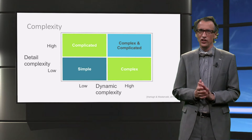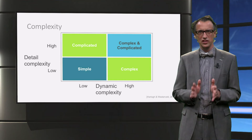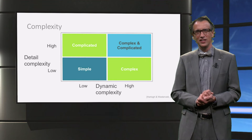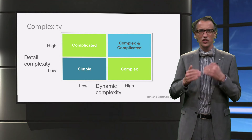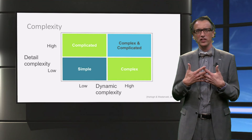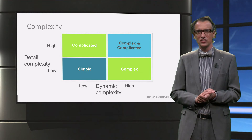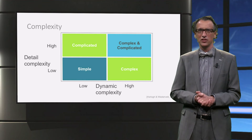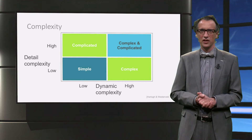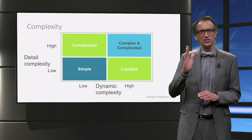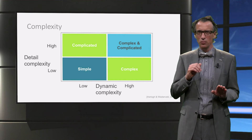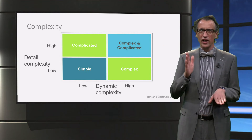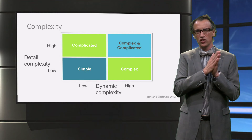Interesting is that we can relate these four management approaches to detail and dynamic complexity. Detail complexity is characterized by a high number of components with a high degree of interrelatedness. Dynamic complexity is characterized by the potential to evolve over time and the limited understanding and predictability. When detail complexity is high, we say the system is complicated. When dynamic complexity is high, we say the system is complex. When both are high, it is both complex and complicated.